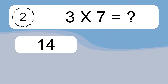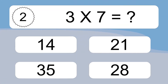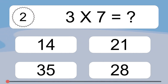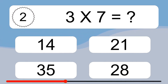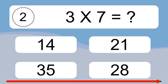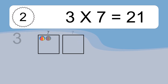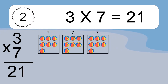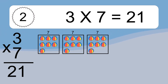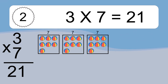Three times seven equals what? Three times seven equals 21. We have three boxes, and each box has seven colorful balls inside. If you count all the balls in all the boxes together, you will have three times seven balls. This equals 21 balls.